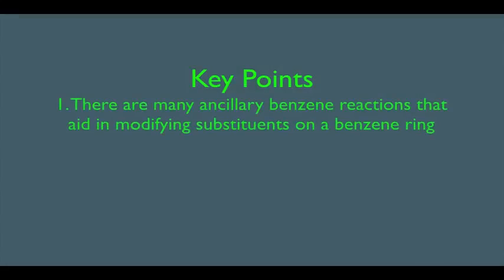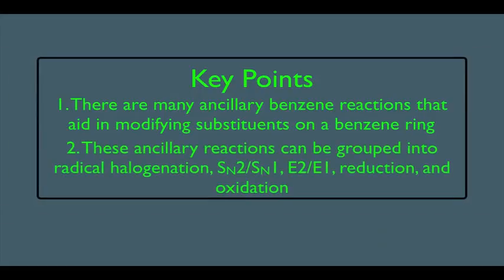In this online lecture, we're going to talk about number one, that there are many ancillary benzene reactions that aid in modifying substituents on a benzene ring. We're also going to see that these ancillary reactions can be grouped into categories: radical halogenation, SN2, SN1, E1 or E2, reduction, and oxidation.